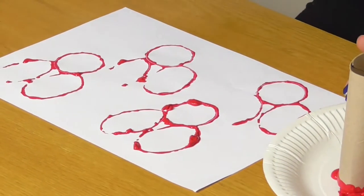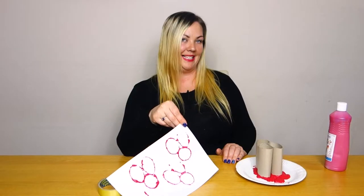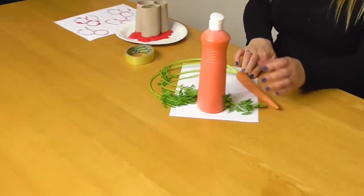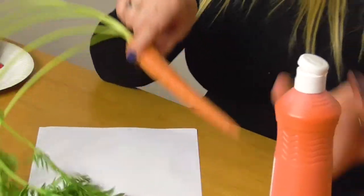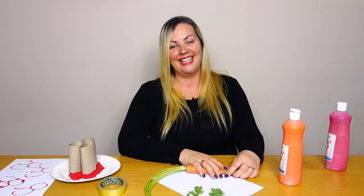That is today's tip for keeping your toddler occupied. Easter bunny painting. For tomorrow you're going to need some plain paper, some orange paint and a carrot. Check back in tomorrow to find out what we're doing with those. Thanks for watching.